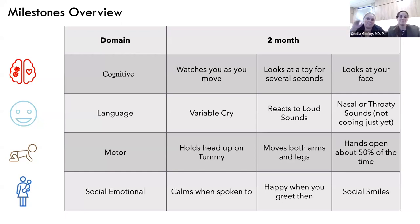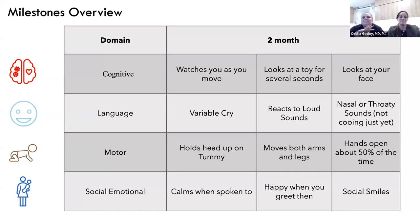Language milestones at two months include a variable cry — you'll start to know the 'I'm hungry' scream versus the 'you changed me too late' cry. Babies also react to loud sounds: around two months, they'll start turning or protecting themselves in response to loud noises. Nasal or throaty sounds are completely normal and your baby is probably not sick — their nasal passages are just very small at this age.